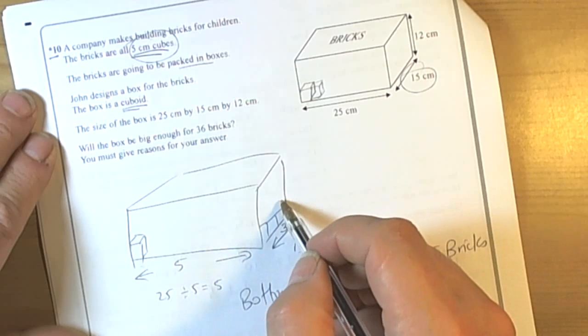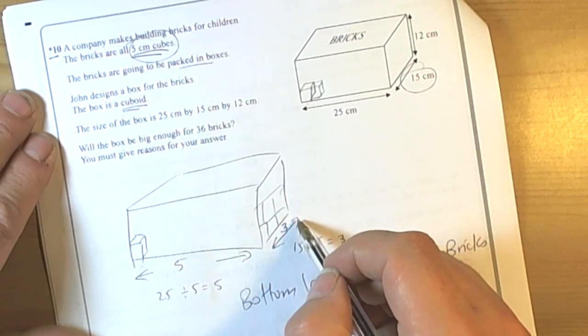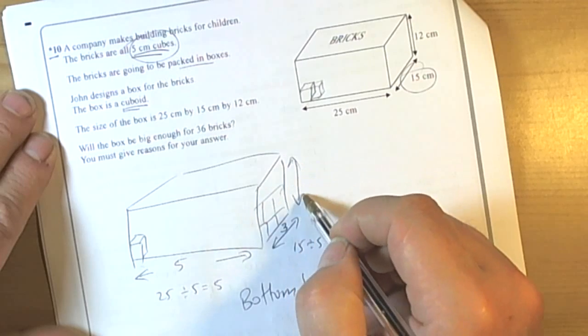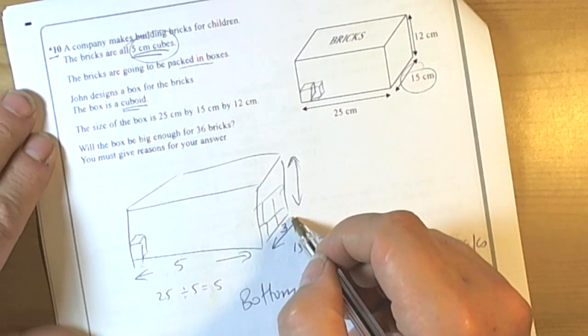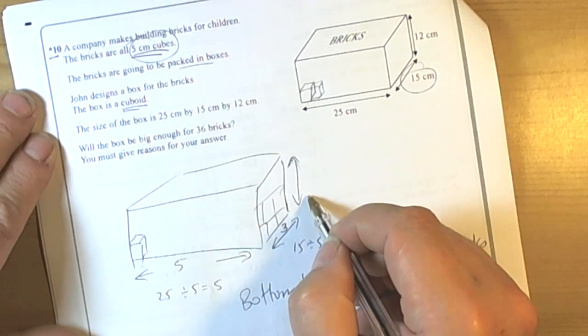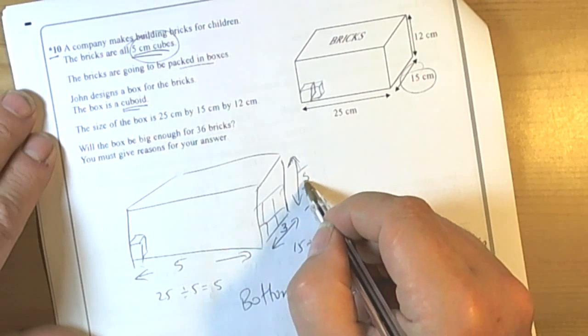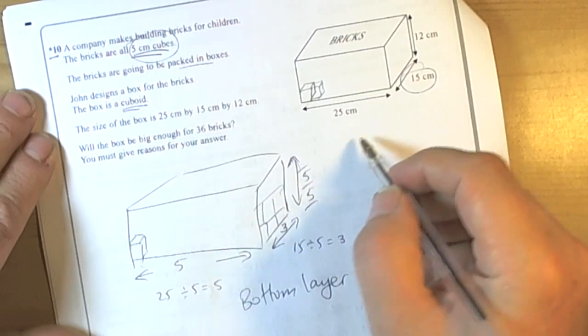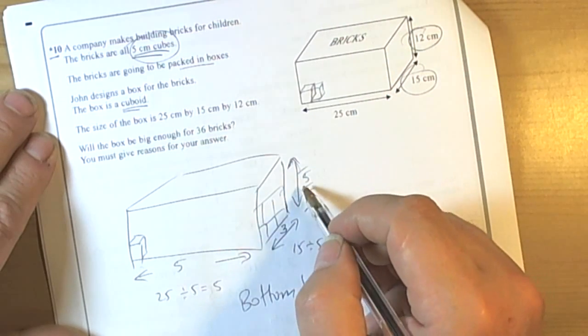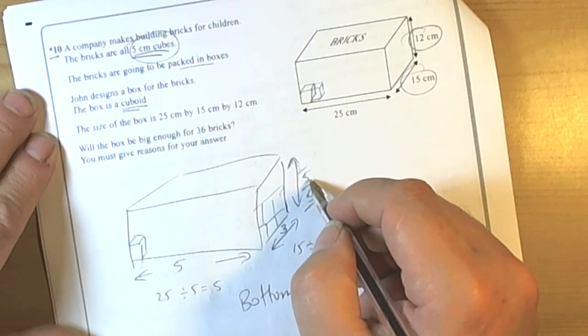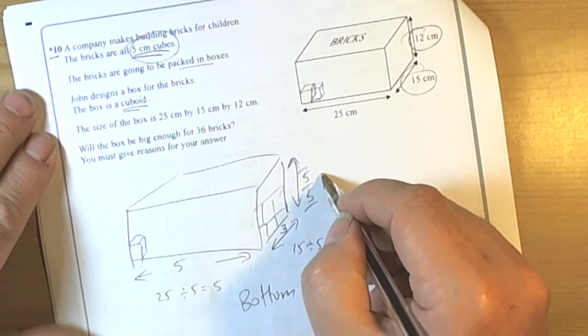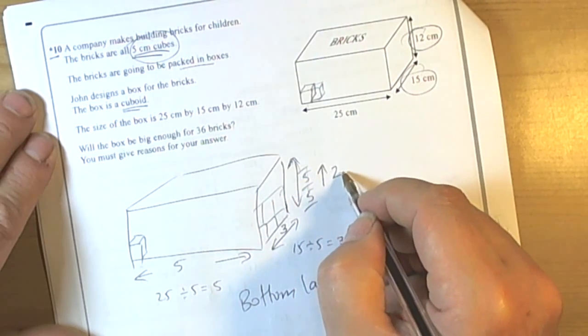If we build up the layers going upwards, we have 5cm for each layer. That first layer would be 5cm, second layer would be 5cm, but from the information we've only got 12cm up. So we can only go 2 layers upwards.